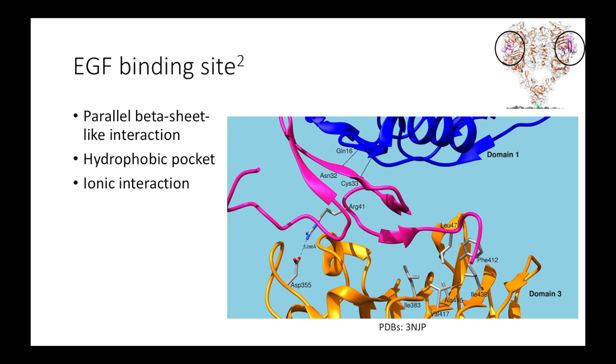EGF binds to the crease between domains 1 and 3 when EGFR is in the extended conformation. By forming strong interactions with both domains, it stabilizes the extended conformation. The rigid tertiary structures of EGF as well as domains 1 and 3 influence the stabilization.